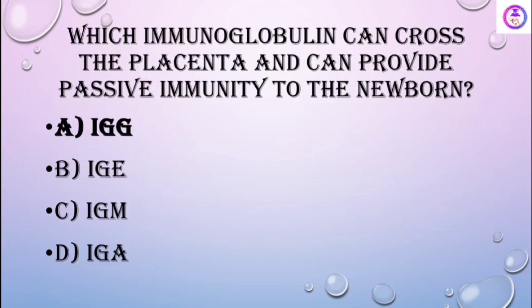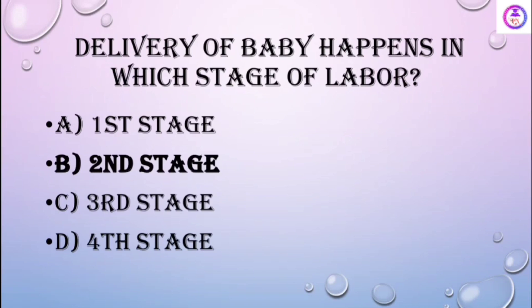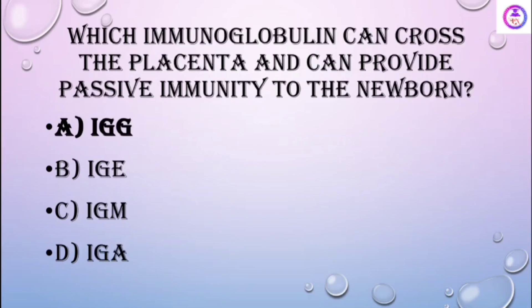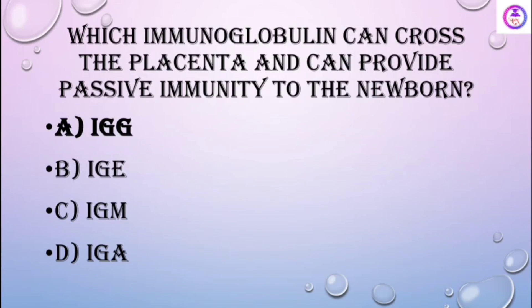Which immunoglobulin can cross the placenta and provide passive immunity to the baby? That is IgG.